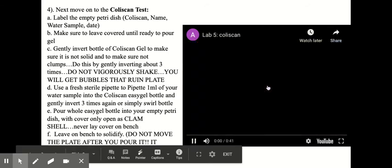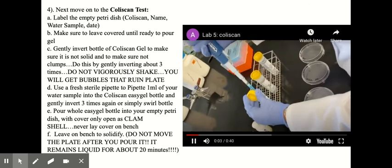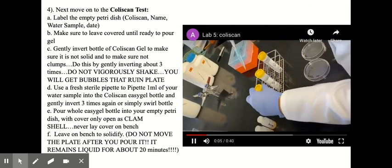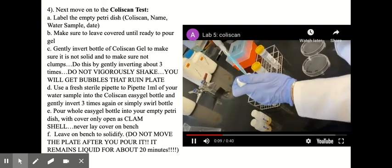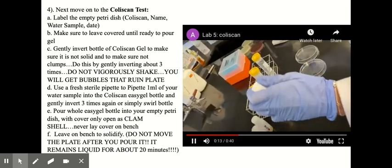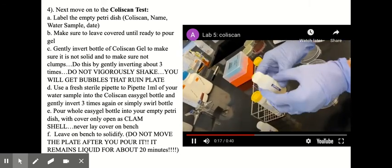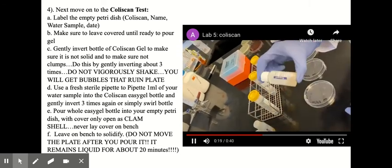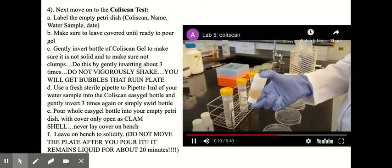So once you've made sure that your gel is not solid in the tube, then you're going to use a fresh sterile pipette to pipette one ml of your water sample into that bottle of the gel. And then tighten the cap and then invert it three times to really thoroughly mix your water sample with the gel.